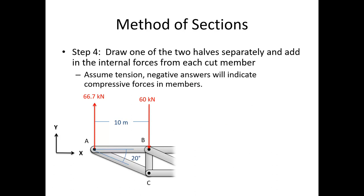Step four: draw one of the two halves separately and add the internal forces from each cut member. Include the reaction forces and load forces, and for each cut member, assume tension. So FBD, FBE, and FCE are added in the direction going from point B to D, B to E, and C to E — along the direction of the member. If we assume tension and get a negative answer, that indicates a compressive force in that member.